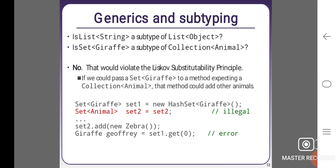Is List<String> a subtype of List<Object>? Generic subtyping. Is Set<Giraffe> a subtype of Collection<Animal>? No. That would violate the Liskov substitutability principle. We could pass Set<Giraffe> to a method that's expecting a Collection<Animal>. That method could add other animals. Set<Giraffe> set1 = new HashSet<Giraffe>();